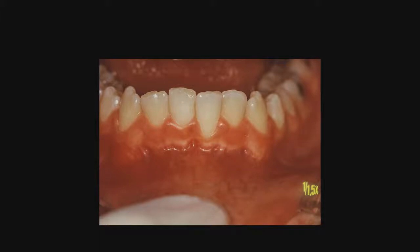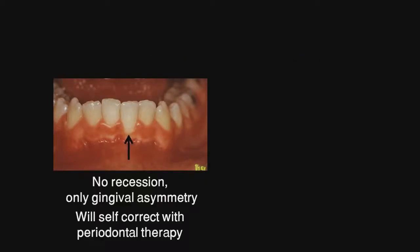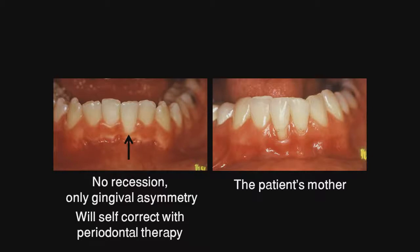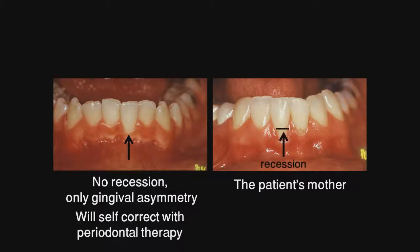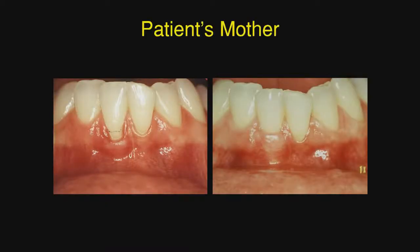I could see from the look on her face that she was not convinced. She frowned and pulled her lower lip down to show me the recession present in her own mouth. On the child, there was no recession — only gingival asymmetry — which does not require grafting. We did see recession on the mother, which does require a connective tissue graft. So rather than grafting the child, we grafted the mother.